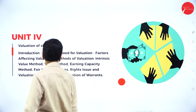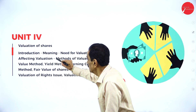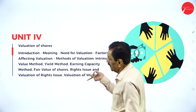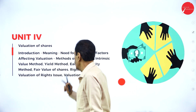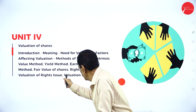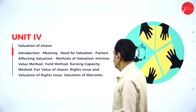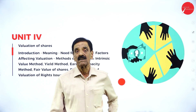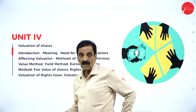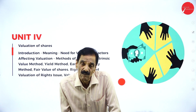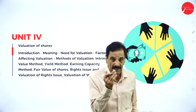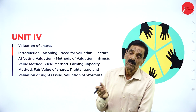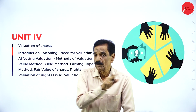Unit 4 — Valuation of Share — covers: introduction, meaning, need for valuation, factors affecting valuation, and methods of valuation: Intrinsic Value Method, Yield Method (Profit Method), Earning Capacity Method, fair value of share, right of issue, valuation of right issue, and valuation of warrants. There are two types of shares — equity share and preference share. We are going to value equity shares using Intrinsic Value Method, Profit Basis Method, and Fair Value Method (intrinsic value plus profit value divided by two).